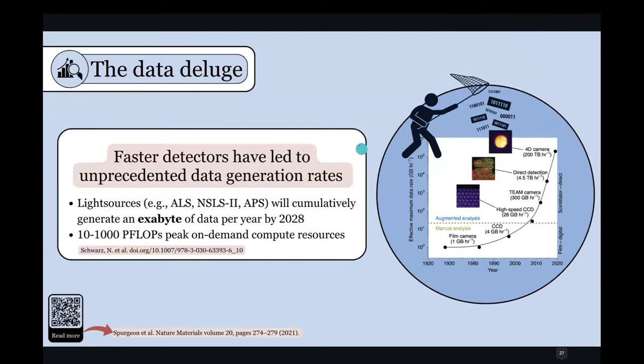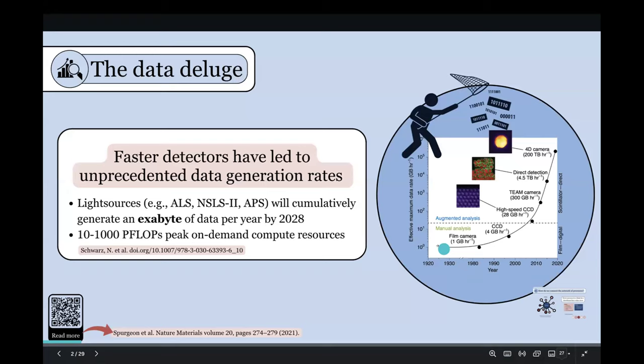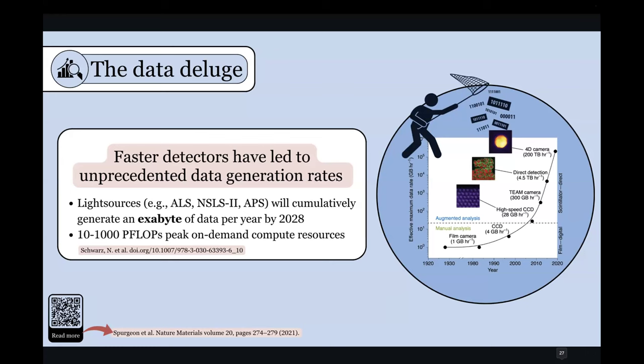So why would we want to do something like this? We're really facing this major problem with data generation rates. And this is because detector technology has kind of exploded these rates. So you can see in 1930, when we were still putting film into our instruments, we would shine some electrons on it and then remove that and manually measure stuff. But that's just not what we do today. And the data generation rate has gone up by about five orders of magnitude here.